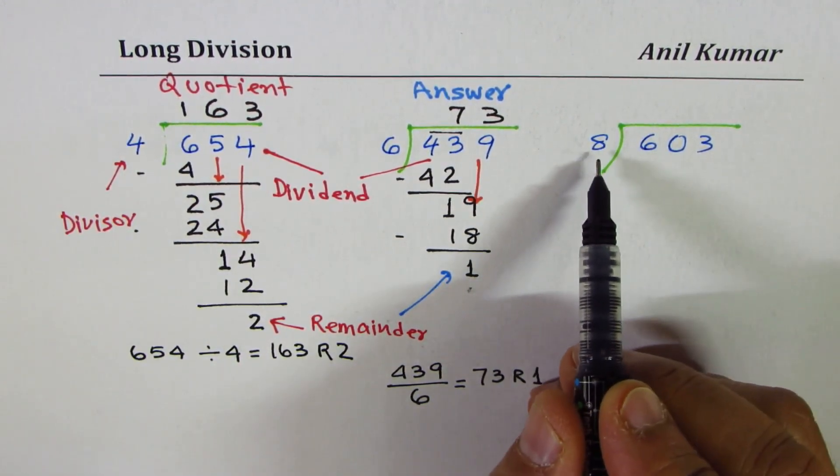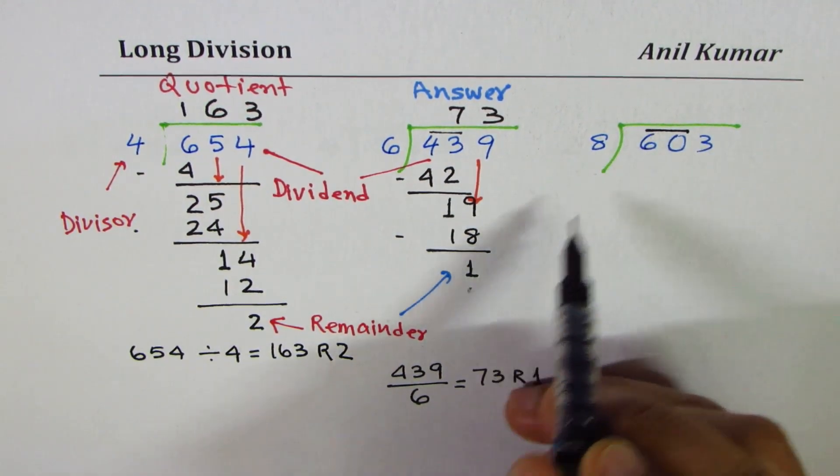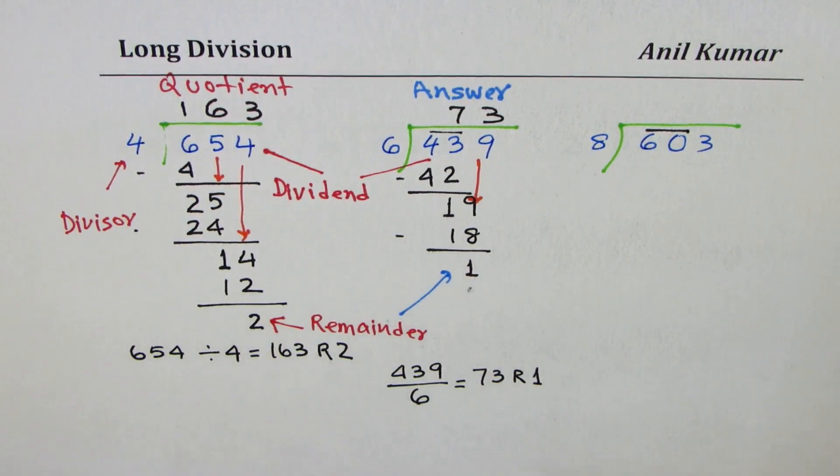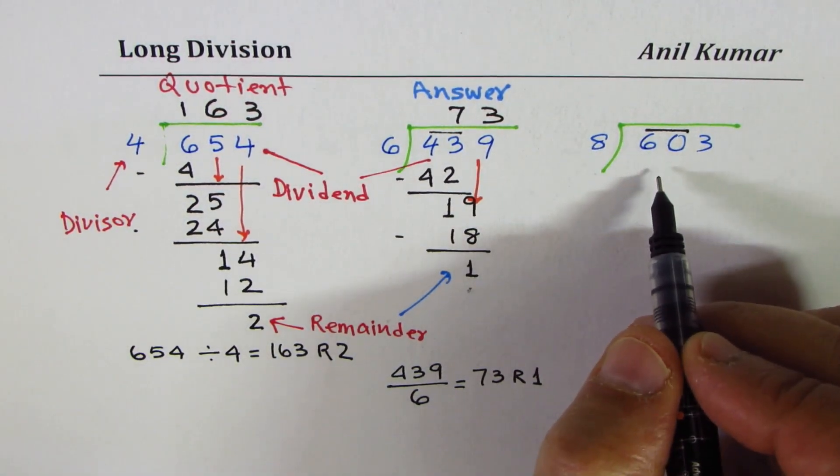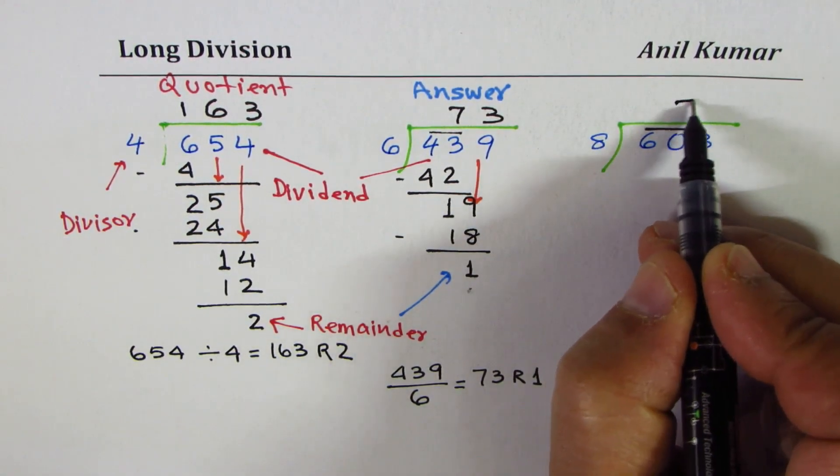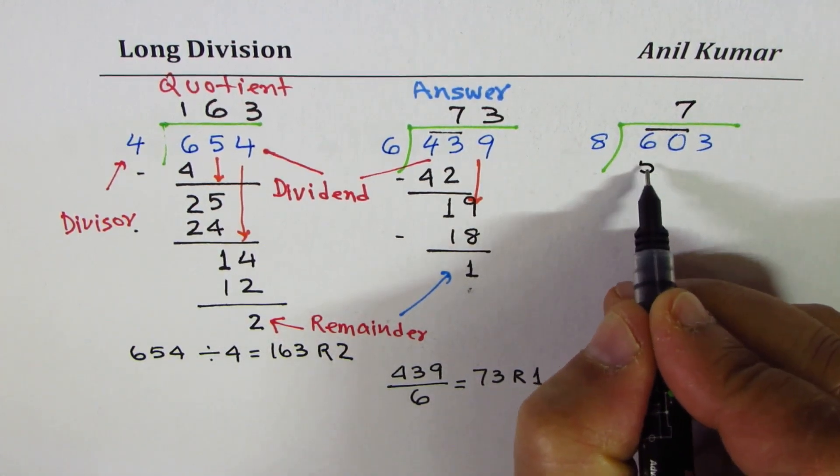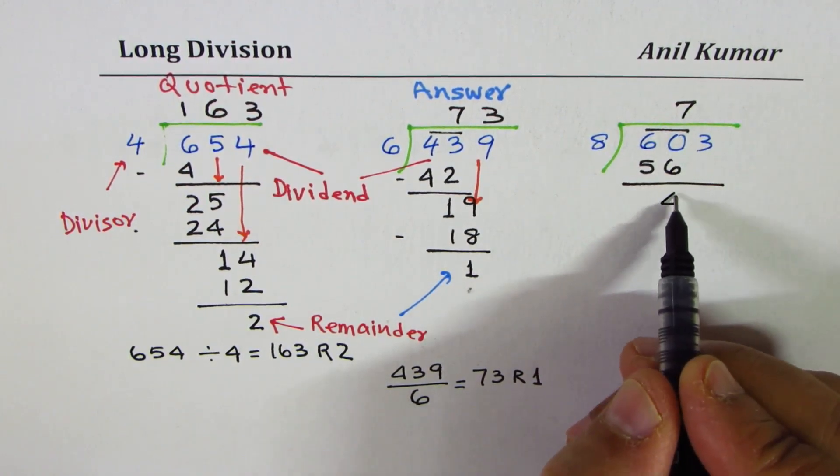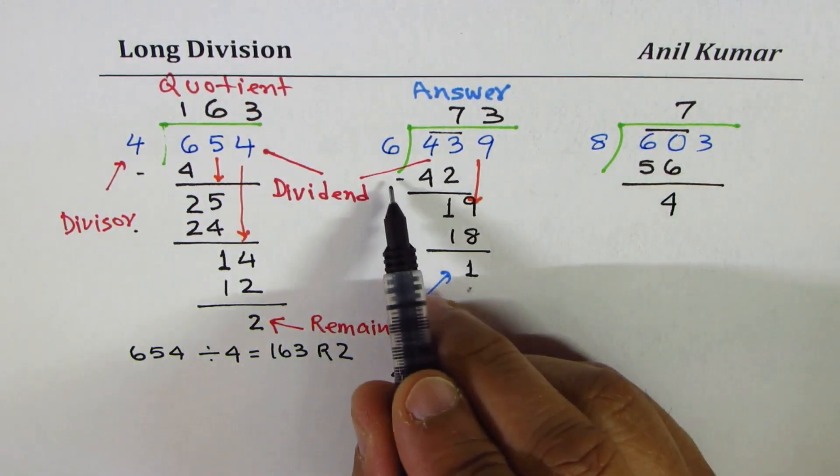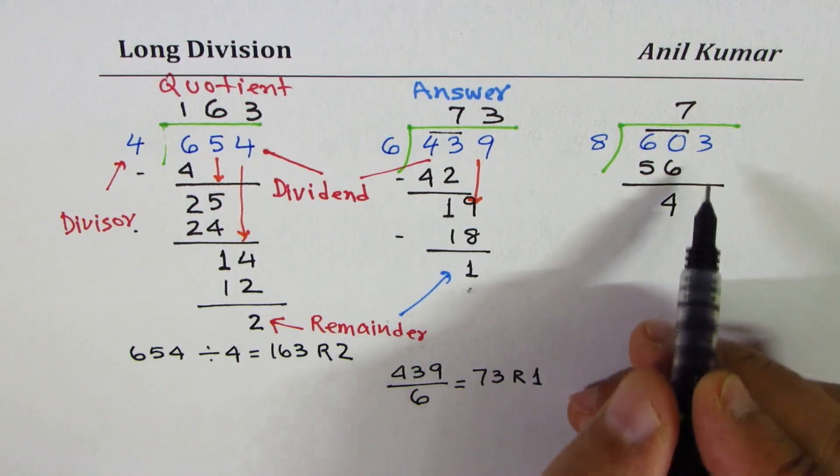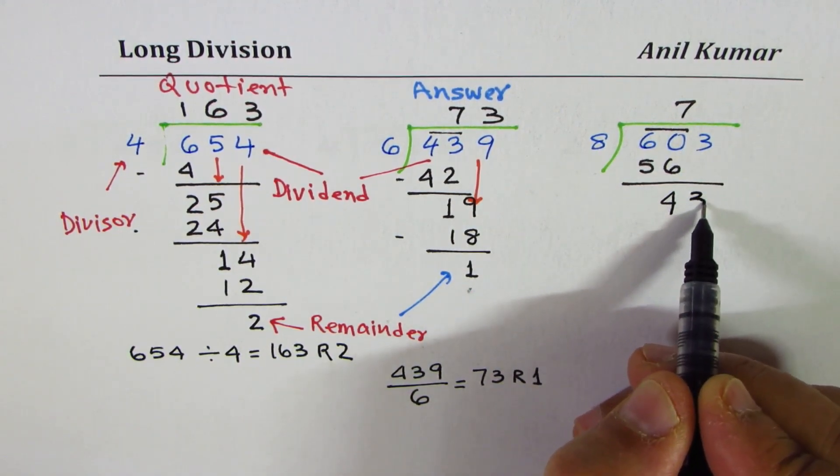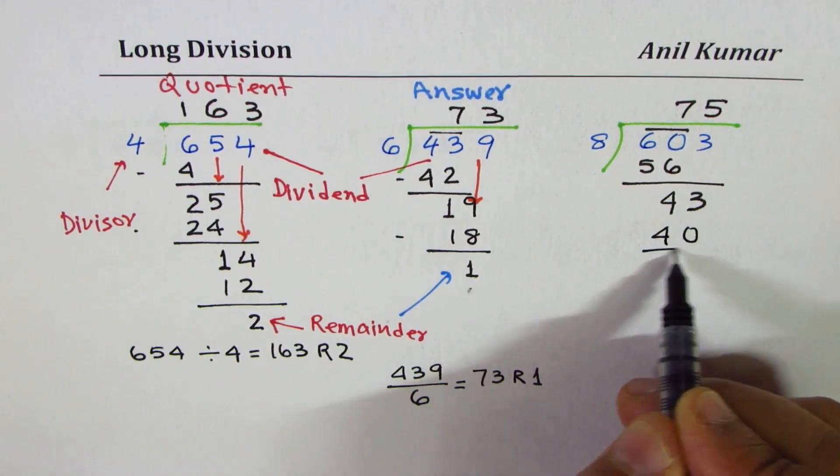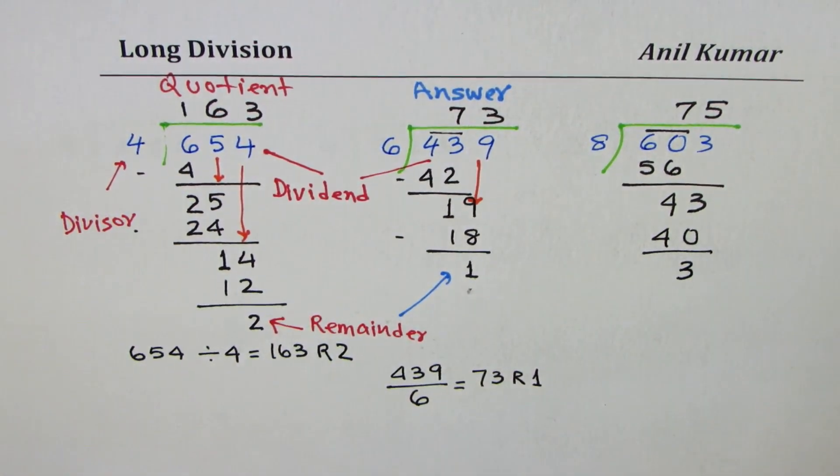603. 6 is smaller than 8, so let's take 2 digits. 60 will be divided by 8 now. 8 times 8 is 64, which is bigger. So we'll try 8 times 7, which is 56. When you take away 56 from 60, you get 4. You don't really have to write a takeaway sign. Bring down 3, it becomes 43. 8 times 5 is 40, the remainder being 3.